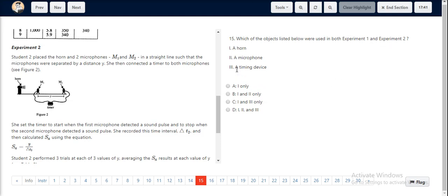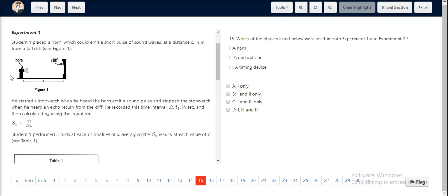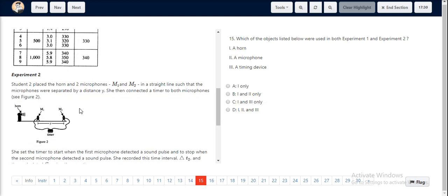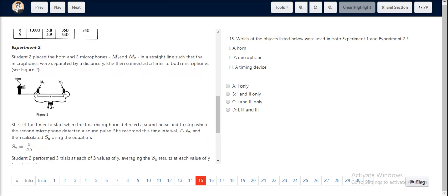We look at object 3 which is a timing device. In experiment 1, the timing device was a stopwatch, whereas in experiment 2, there was a timing device which was a timer as we can see in figure 2. Hence, a timing device was used in both experiment 1 and experiment 2.